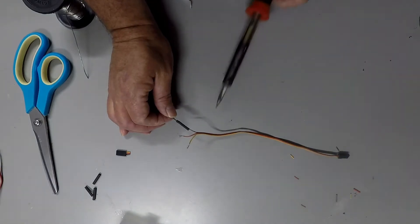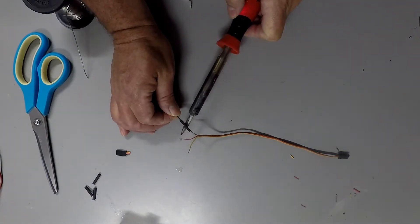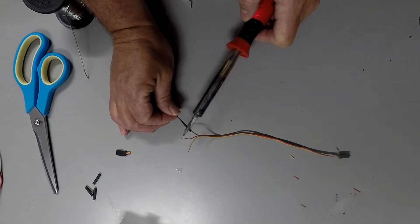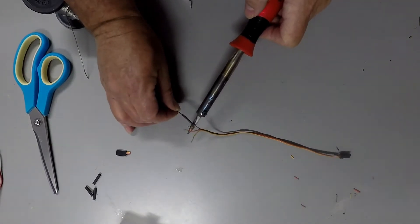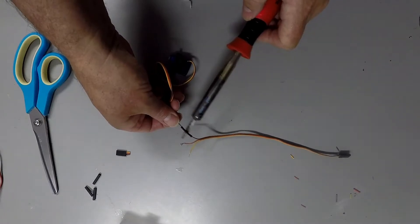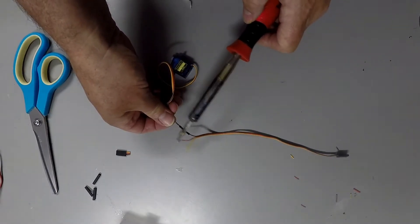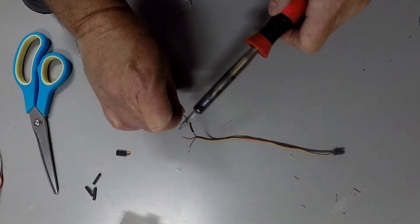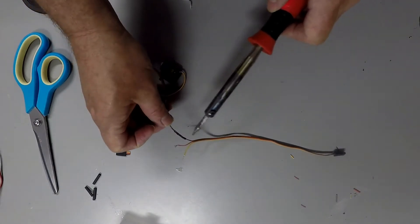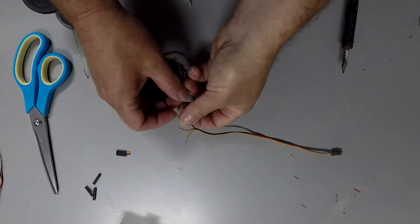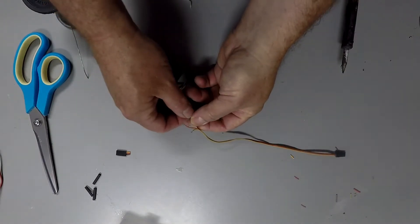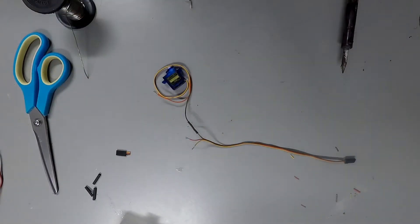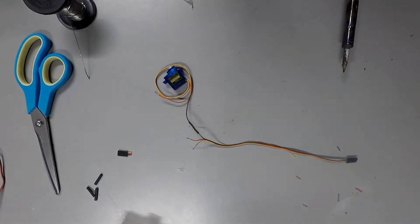You just want to kind of run it around. Make sure it shrinks right down. You can see there I've dropped a little bit of metal on there. A little bit of molten metal. But that's alright. That'll come off. Right. So that's one done. Let's get that metal off. Right. Let's move on to the next one.